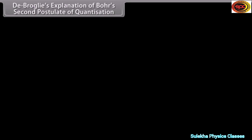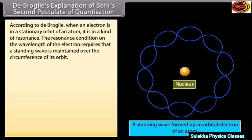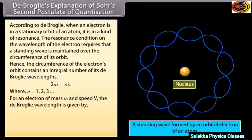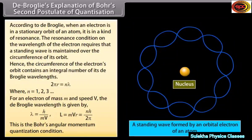De Broglie's explanation of Bohr's second postulate: According to de Broglie, when an electron is in a stationary orbit, it is in a kind of resonance. The resonance condition requires that a standing wave is maintained over the circumference of its orbit, so the circumference contains an integral number of de Broglie wavelengths: 2πr = Nλ (N = 1, 2, 3…). For an electron of mass M and speed V, the de Broglie wavelength is H/MV, giving MVR = NH/2π — which is Bohr's angular momentum quantization condition.